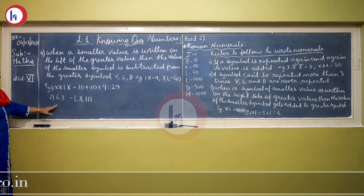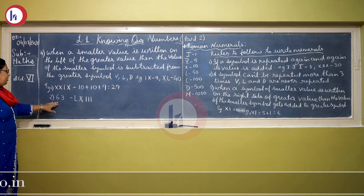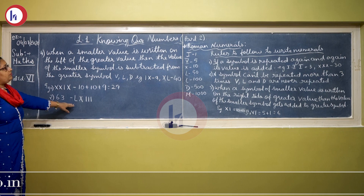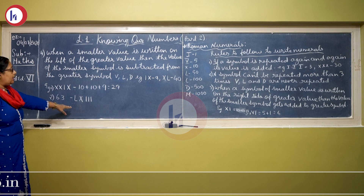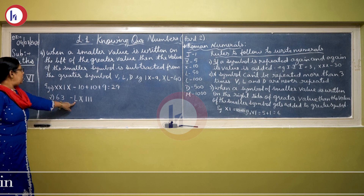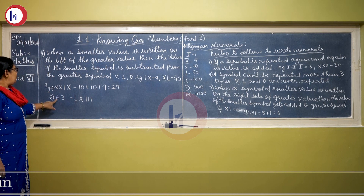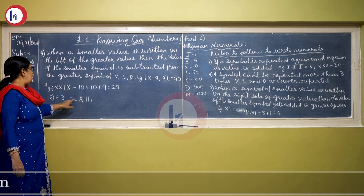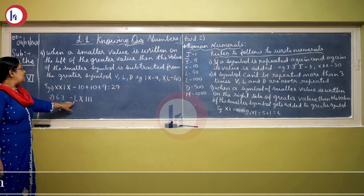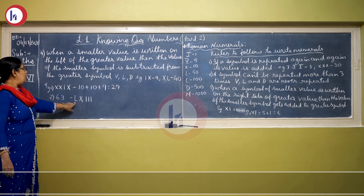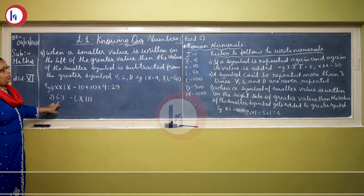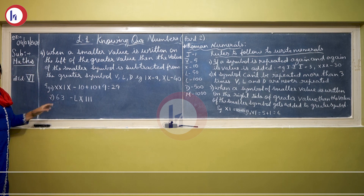Same way, the number 63 in Hindu-Arabic has to be written in Roman numerals. 60 we cannot write directly. L stands for 50, so 50 plus 10 gives 60, plus 3 — which is written as I three times. So 63 in Roman numerals is L X I I I.